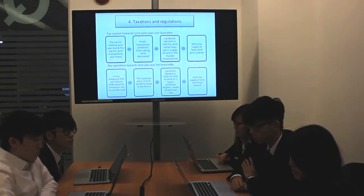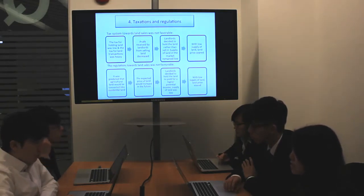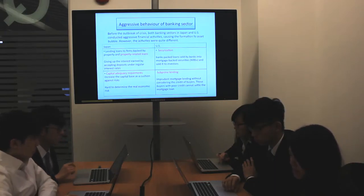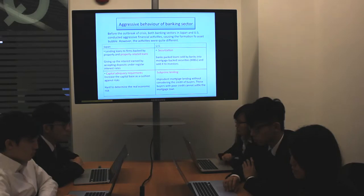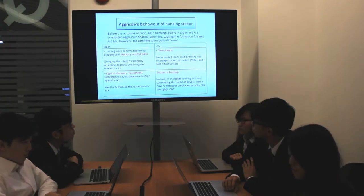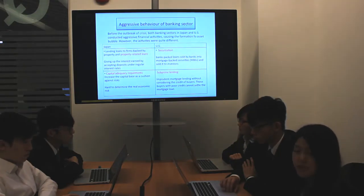Fourthly, taxation and regulations in Japan helped to reduce land supply and also boosted land prices. There are some similarities between Japan in 1989 and the United States in 2008. In the United States, securitization and subprime lending were conducted as the aggressive behavior of the banking sector. Banks at that time packed loans into mortgage-backed securities and sold them to investors. As people believed that the housing market would not fail, MBS were popular among investors. With subprime lending, many home buyers with poor credit were also able to obtain loans, but eventually they failed to settle the loans, which contributed to the formation of the housing bubble.